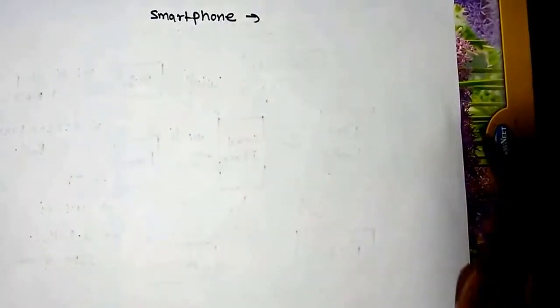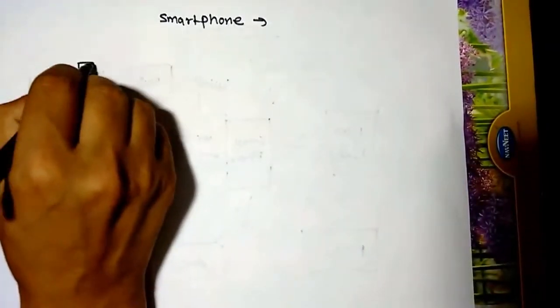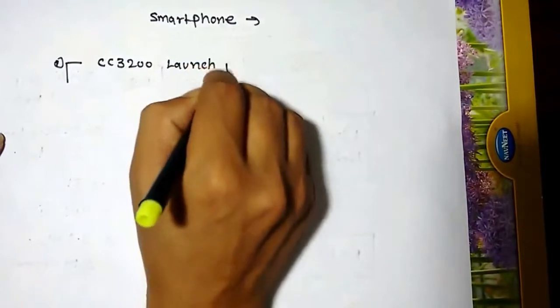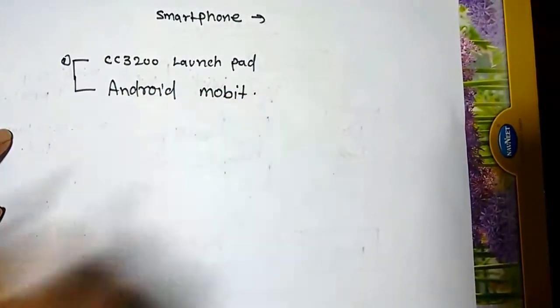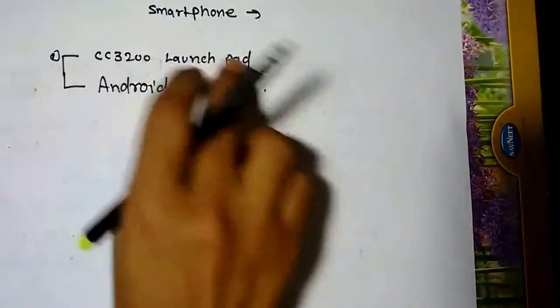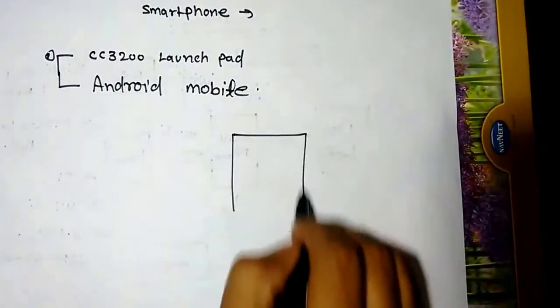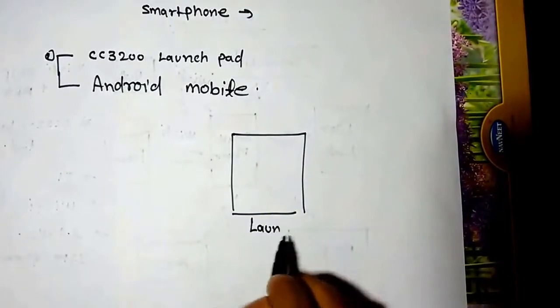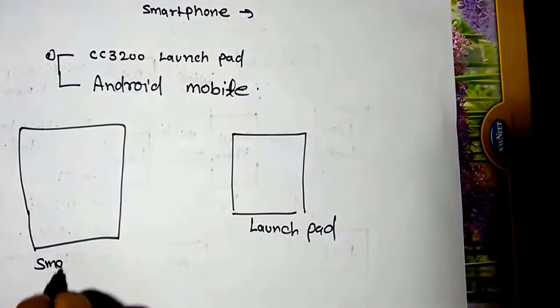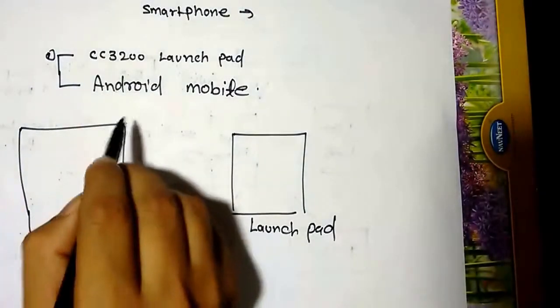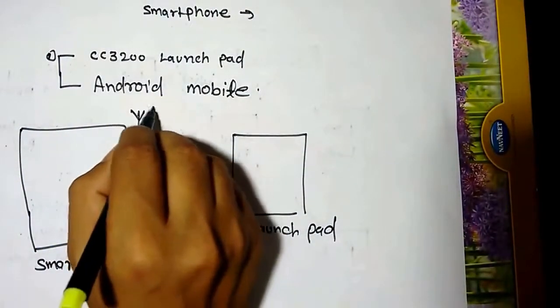Let's see how I am going to design your smart home through the CC3200 launchpad and your mobile device. You need basically two things: CC3200 launchpad and Android mobile. This is your launchpad and this is your smartphone. Your smartphone has Wi-Fi.